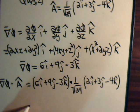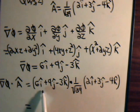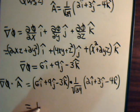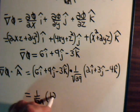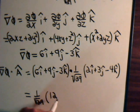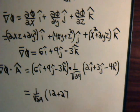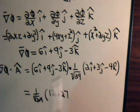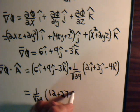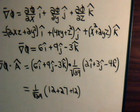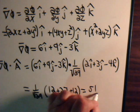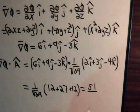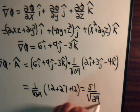So take this dot product and we have i dot i, 1 over the square root of 29, times 6 times 2 is 12, j dot j, 9 times 3 is 27, k dot k minus 4 times minus 3 is plus 12. So this is 24 plus 27, that equals 51 divided by the square root of 29.